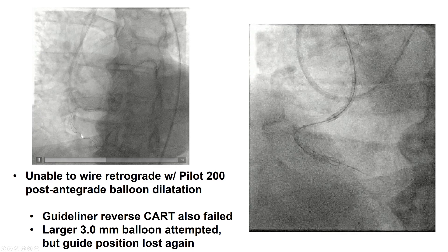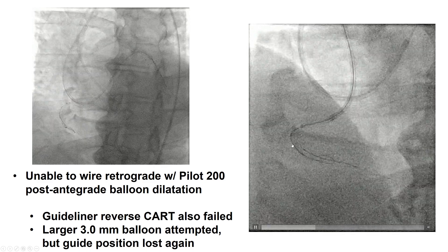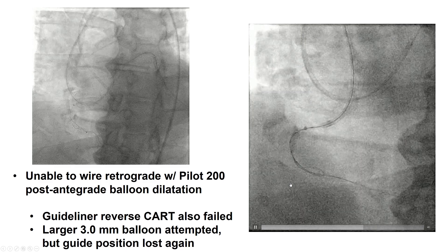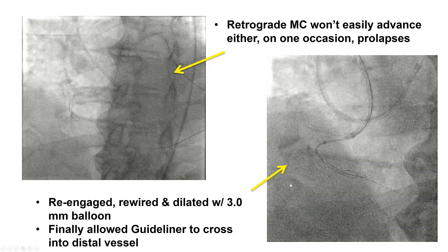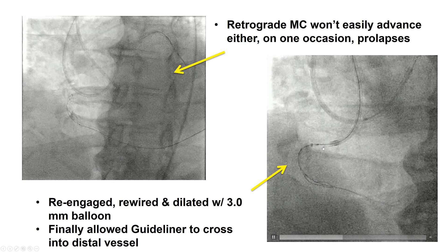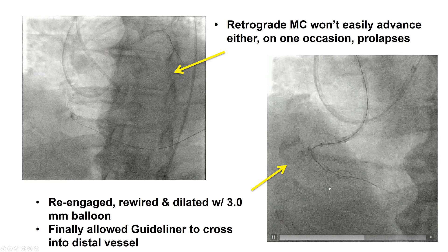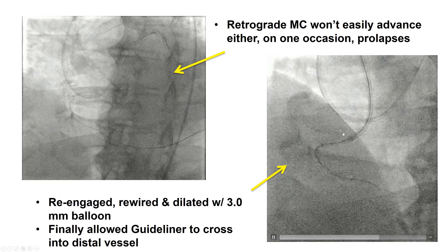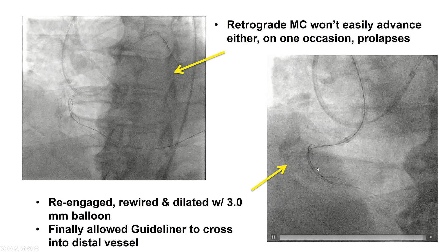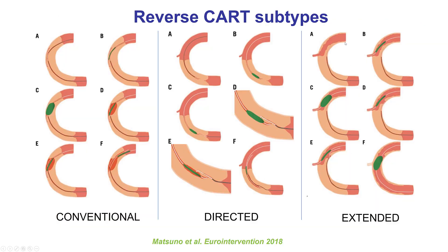We had an antegrade knuckle and tried to cross retrograde but it didn't work. We advanced a balloon in the mid-right coronary artery — up to a 3.0 mm balloon — that didn't work either. We decided to change the location of re-entry using the inch-worming technique, and we were able to advance the GuideLiner from antegrade all the way down to the distal right coronary artery, providing a better target for our retrograde equipment. This effectively switched us to what's called an extended reverse CART, going distal to the occlusion to re-enter close to the distal cap.